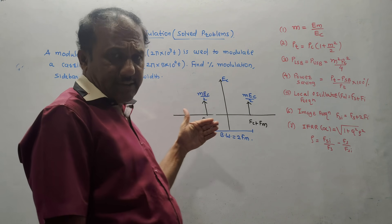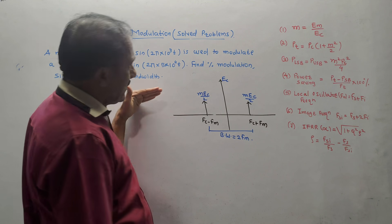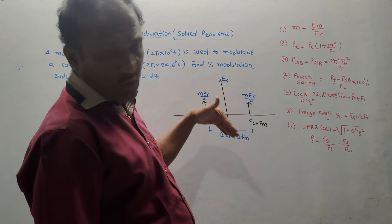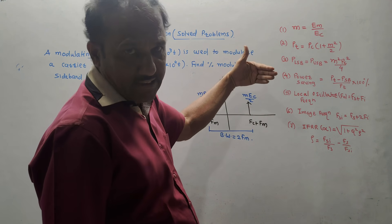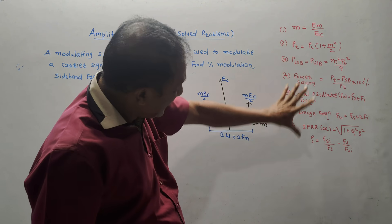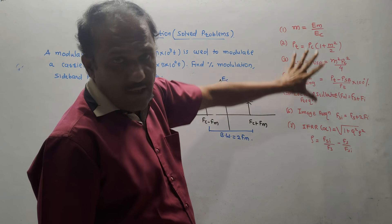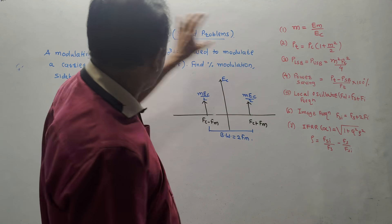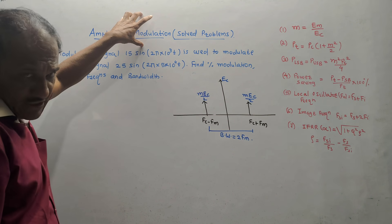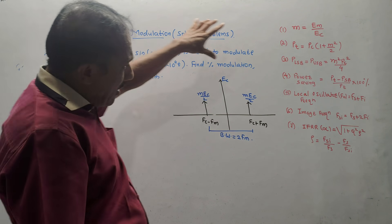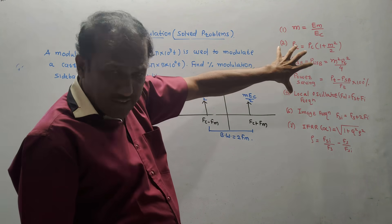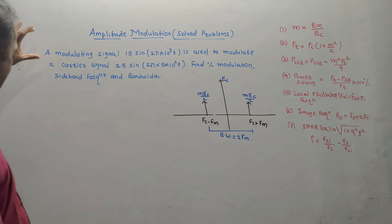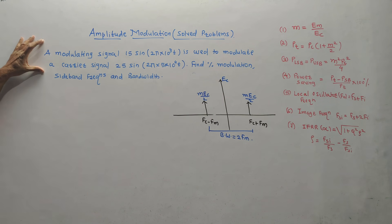In the earlier session, we have derived particular derivations — to calculate the power, to calculate the modulation index, and so on. I have made a list of formulae. Only these formulae are sufficient to solve any numerical related to amplitude modulation. So without wasting time, let us start the numerical.